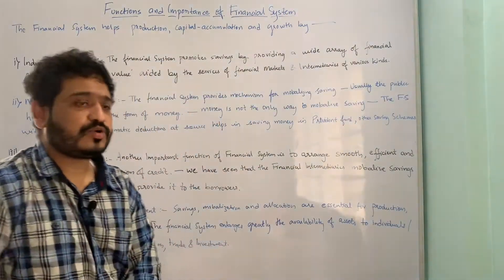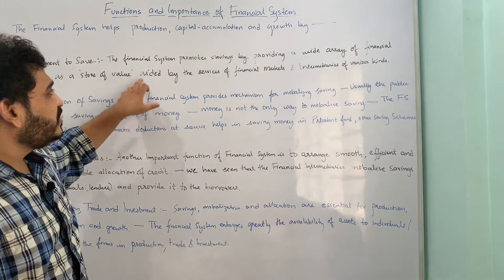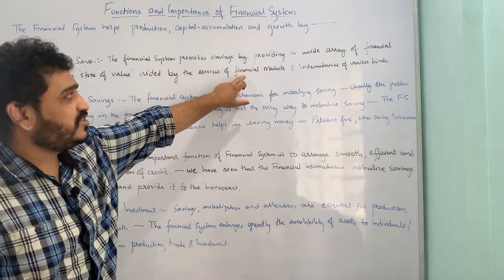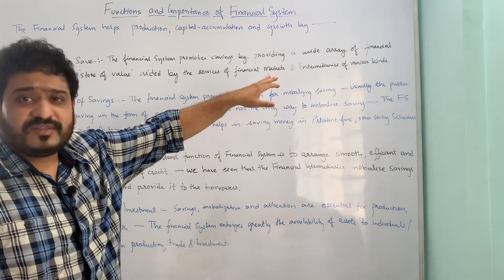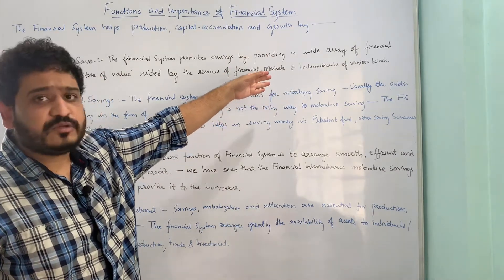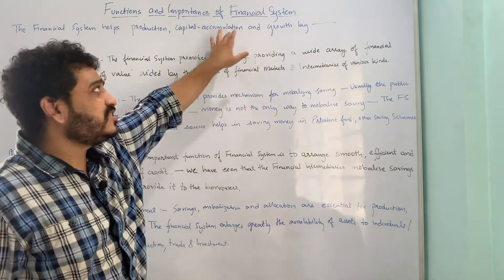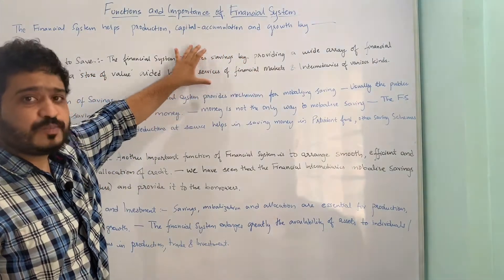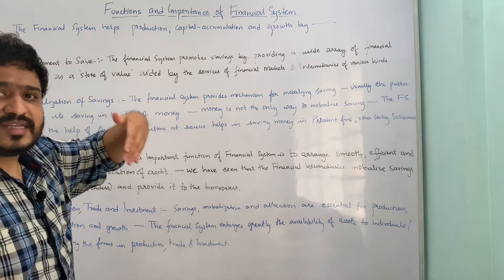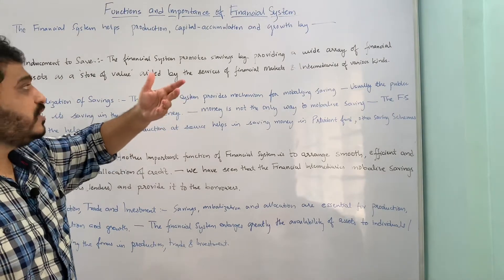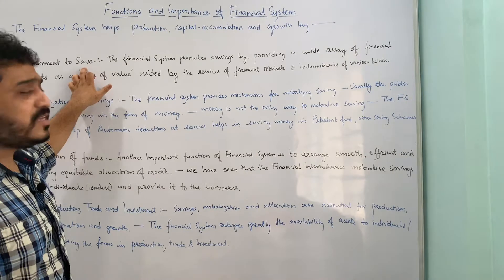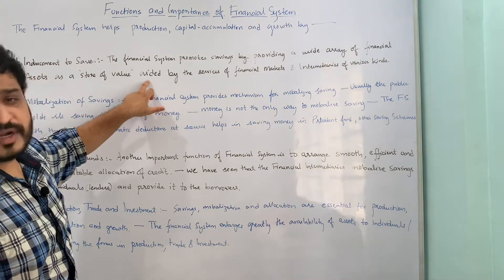These financial assets are aided by the services provided in the financial markets and the various kinds of intermediaries providing those services. That is how the financial system is helping us to promote saving — to induce and increase the push to move towards savings. This is the first point of importance or the first function of the financial system.